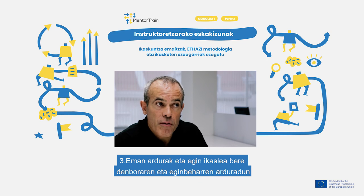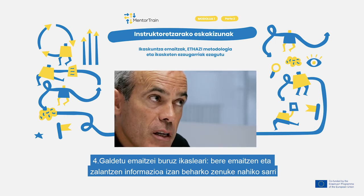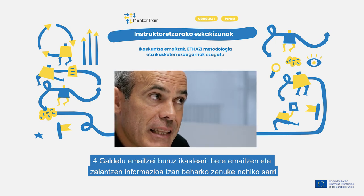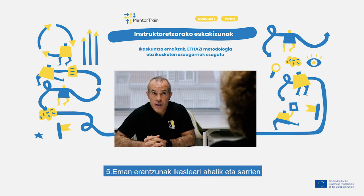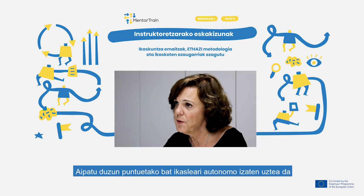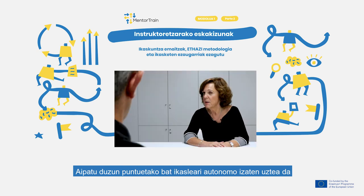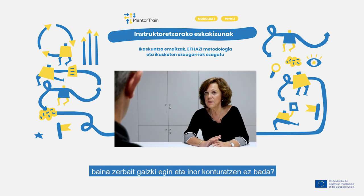First of all, let the apprentice be autonomous. Second, give him some instructions and let him reach his own conclusions. Third, make him responsible for his time and duty management. Fourth, ask him for feedback — you should be informed about his results and doubts quite often. Fifth, give feedback to him as often as you can. And sixth, enroll him in a work team. One of the first things you mentioned is that the apprentice should be autonomous — but what if he does something wrong and nobody notices it?